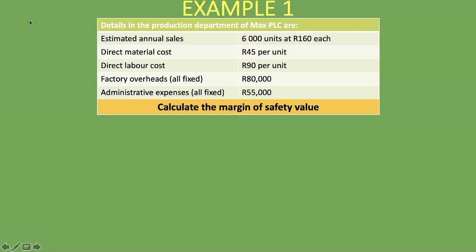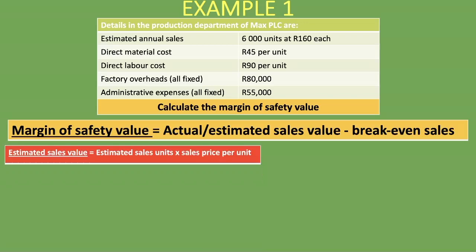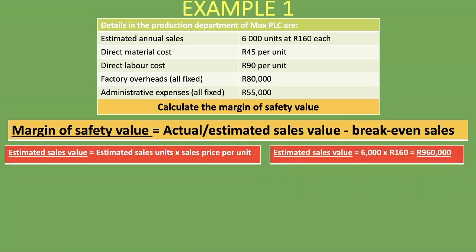Let's bring up our formula: actual or estimated sales value minus break-even sales. The actual or estimated sales value is usually given. You take the number of units multiplied by the selling price per unit. The very first line item is estimated annual sales — 6,000 units at 160 rand each — so multiplying the two together gives us our estimated sales value: 6,000 times 160 rand equals 960,000 rand.